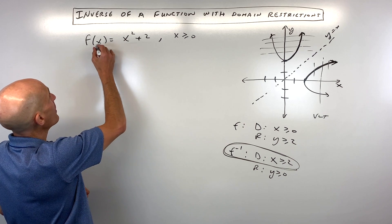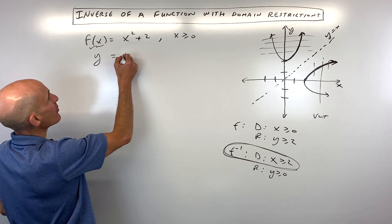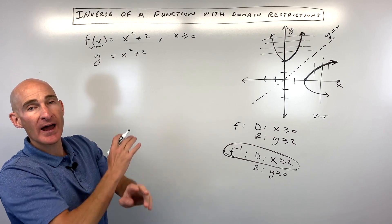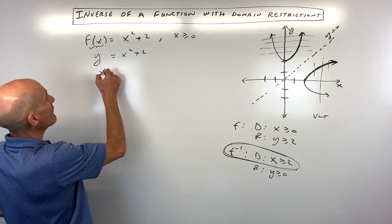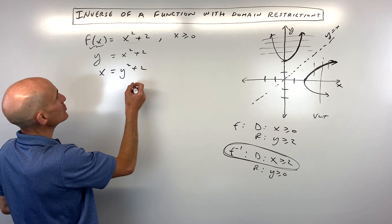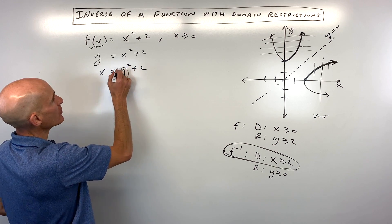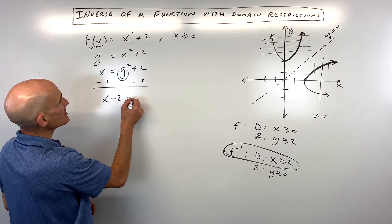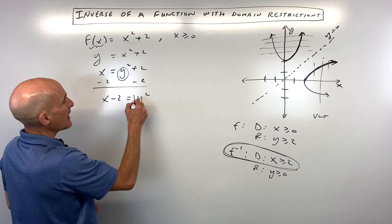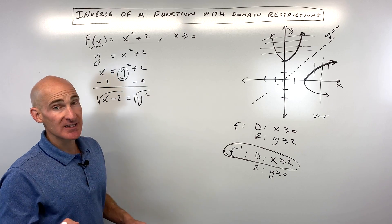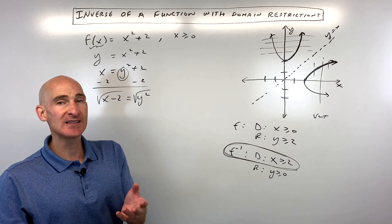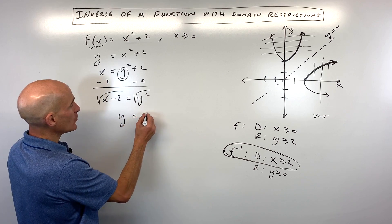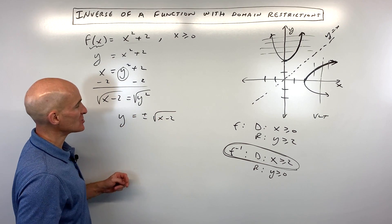This is important because we'll want to state the domain when we find the inverse. So let's do that now. Replace f of x with y — that's our output. Wherever you see x, put y, and vice versa. So we get x equals y squared plus 2. Solving for the new y, we work from the outside in: subtract 2 from both sides to get x minus 2 equals y squared, then take the square root of both sides.